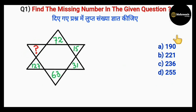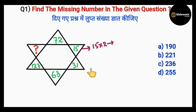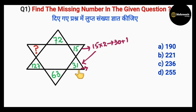The first question gives us this type of figure — the missing number is here and these are the options. First, we'll move in the clockwise direction. The number here is 15, then 31, then 63, and so on. We'll first check what operation on 15 gives us 31. If we do 15 into 2, that equals 30, then plus 1 gives us 31. Now we apply the same operation to 31: 31 into 2.